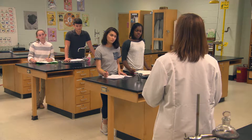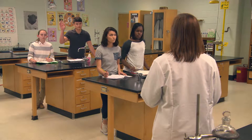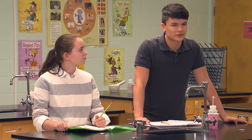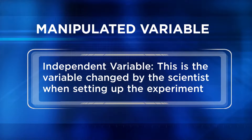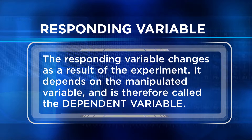Too many variables can ruin the experiment. Well, if too many things are changing, you might not know exactly why you got the results that you did. Exactly. In a good experiment, only two variables are allowed to change. The scientist changes one variable — the manipulated variable. Because it's changed by the scientist and doesn't depend on any other factors, it's also called the independent variable. The responding variable changes as a result of the experiment; it depends on the manipulated variable and is therefore called the dependent variable.